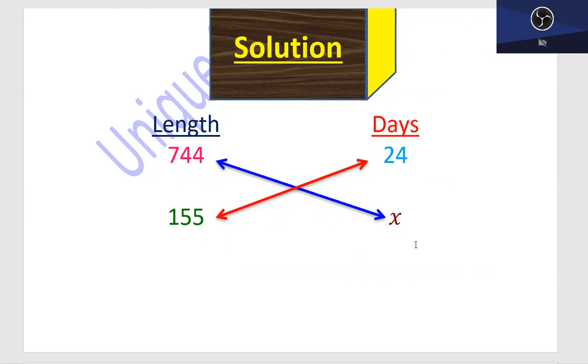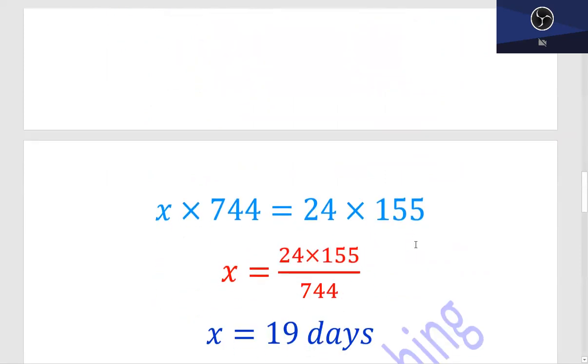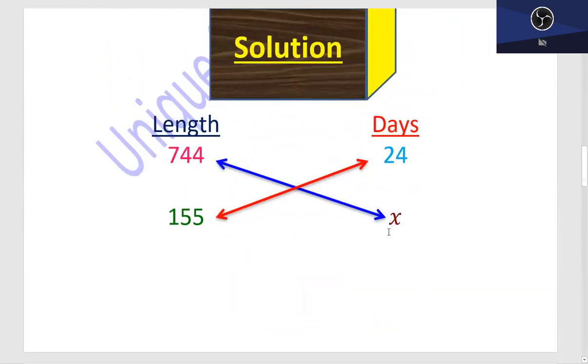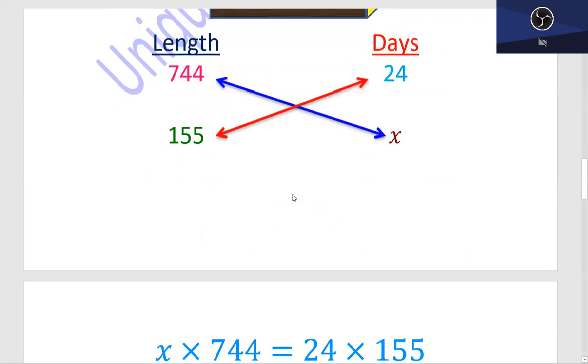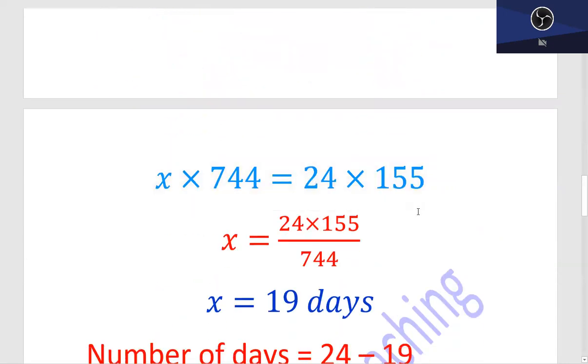So this means it's a direct relation because the same tendency is obtained. For direct relation, we cross multiply using the blue and red lines: 744 times x equals 24 times 155.